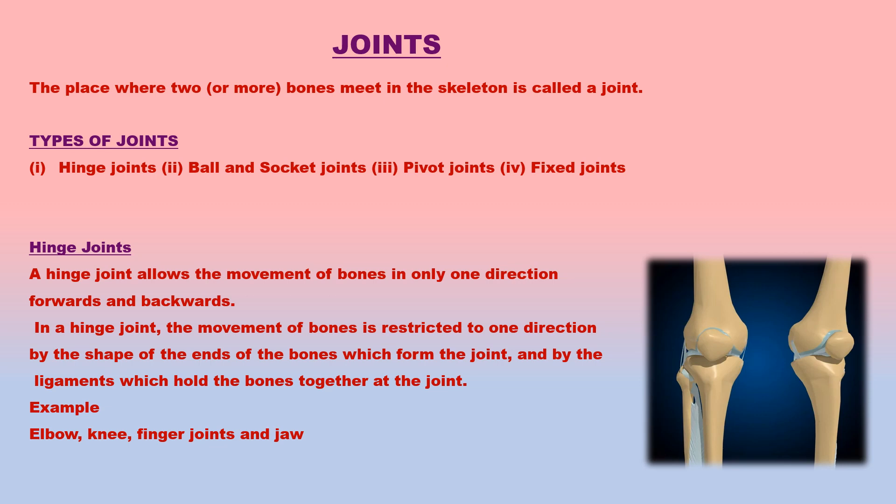A hinge joint allows the movement of bones in only one direction — forwards and backwards. The movement is restricted by the shape of the ends of the bones and by the ligaments which hold the bones together at the joint. In our body, hinge joints occur at the elbow, knee, knuckles, finger joints and jaw.